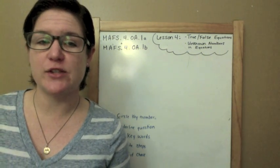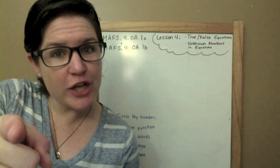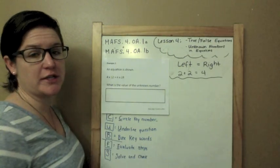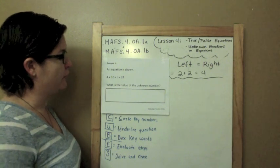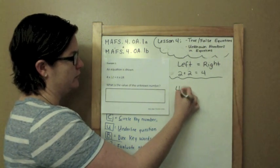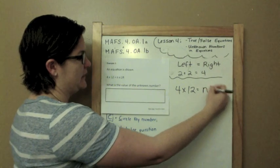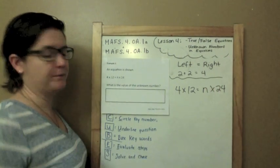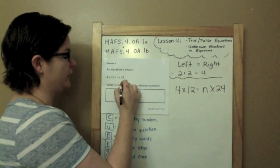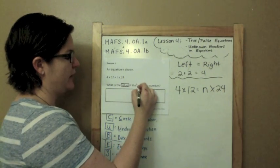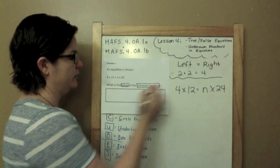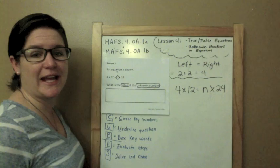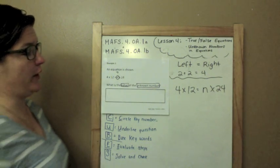Let me teach you. An equation is shown. It's an equation because it has an equal sign: 4 times 12 equals n times 24. What is the value of my unknown number n? N is my unknown number, so I need to figure out what does that n equal.